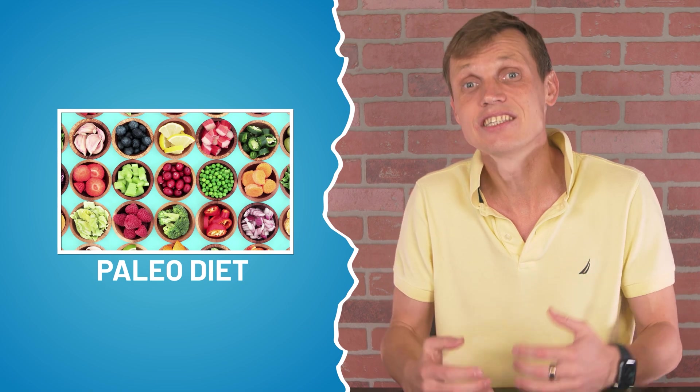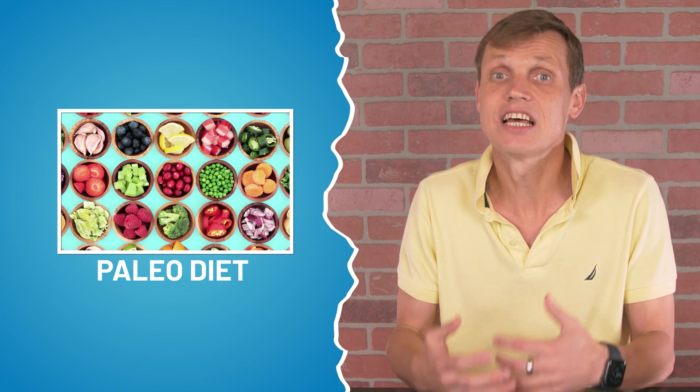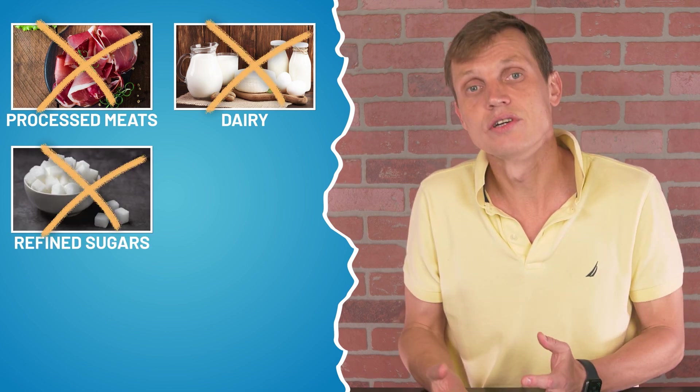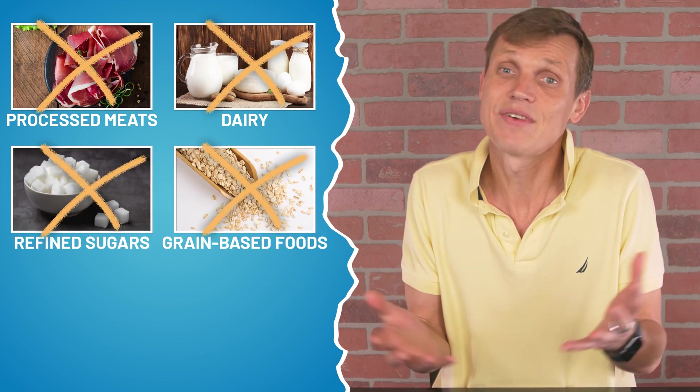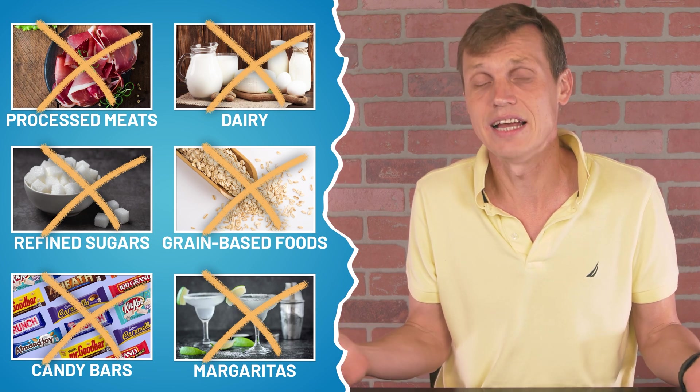The Paleo diet relies on natural foods that our ancestors ate during the Paleolithic era. This means the exclusion of processed meats, dairy, refined sugars, and grain-based foods. They didn't have candy bars or margaritas during the Old Stone Age.